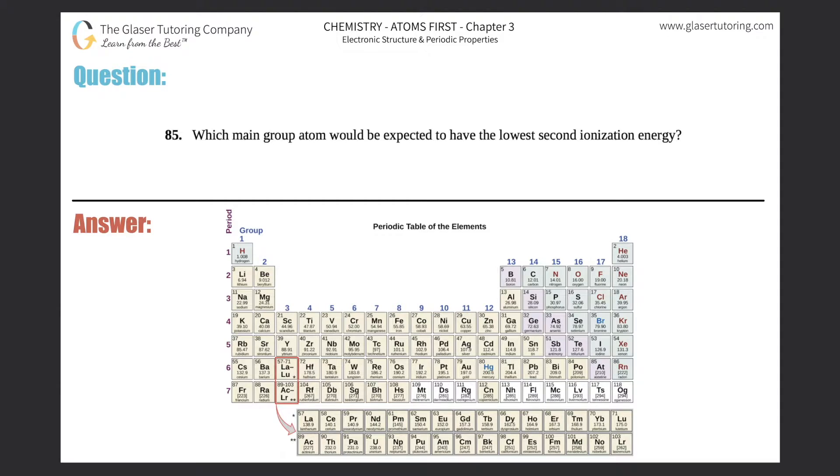Number 85: Which main group atom would be expected to have the lowest second ionization energy? There are a couple of things we can read into this question to eliminate a lot of elements on the periodic table.